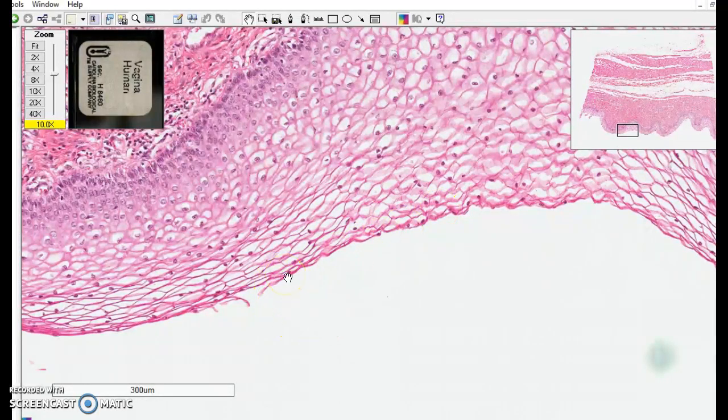This is different than the keratinized type because as the cells die in keratinized epithelium, they become more compact. Those tough keratin bundles bind together and stay as little flakes at the body surface. Here the cells die off and get scraped away individually, so you'll see more of these empty cells than you would see in keratinized stratified squamous epithelium.